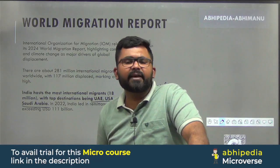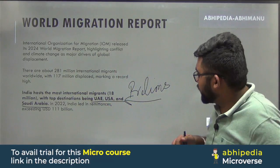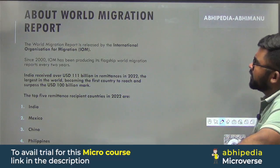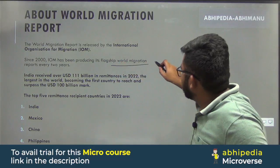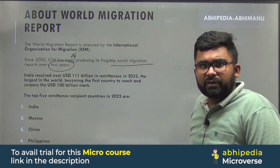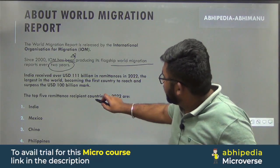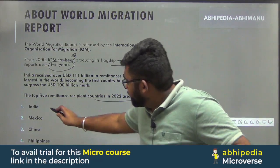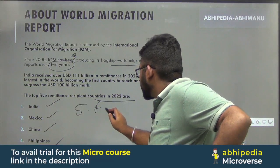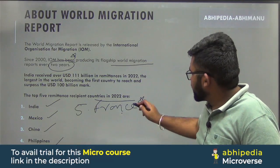Since 2000, IOM has been producing its flagship migration report every two years — it is not an annual report, so that is important. The top five remittance recipient countries in 2022 were: first India, second Mexico, third China, fourth Philippines, and fifth France.